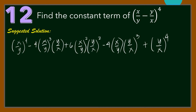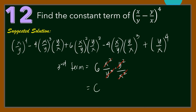We can observe that the 3rd term results in a constant term, such that the 3rd term equals 6 times (x²/y²) times (y²/x²). We see that x²/x² = 1 and y²/y² = 1. Hence, this is the constant term in the expansion and that is equal to 6.